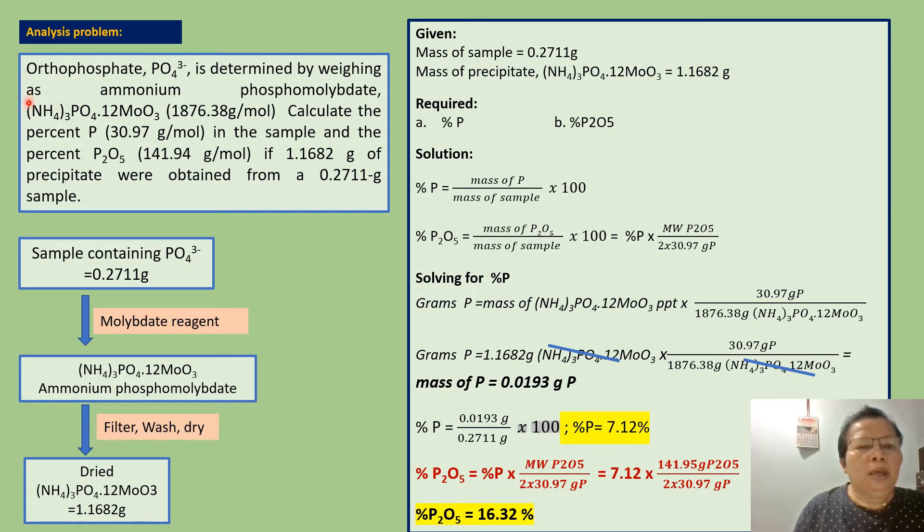Orthophosphate PO4³⁻ is determined by weighing as ammonium phosphomolybdate (NH4)3PO4·12MoO3. Calculate the percent phosphorus in the sample and the percent diphosphorus pentoxide P2O5 if 1.1682 grams of precipitate were obtained from a 0.2711 gram sample.